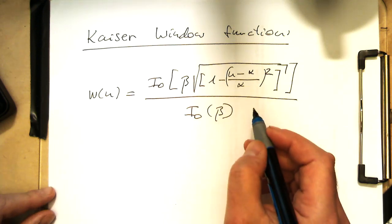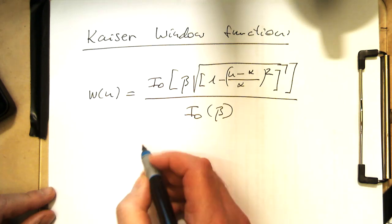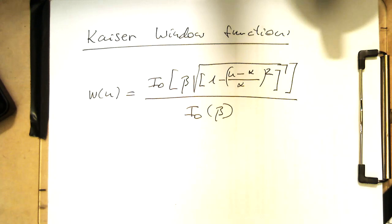So now we've got these two parameters alpha and beta here. We need to define these for the window.